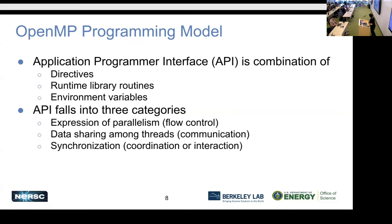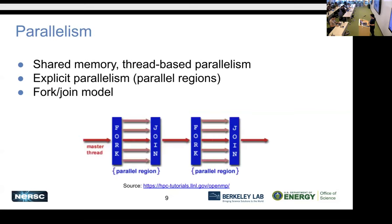OpenMP uses a shared memory, thread-based paradigm called the fork-join model. One primary thread starts the program, then launches into a parallel region where it forks a team of threads. These threads distribute and run the workload in parallel. When the parallel region finishes, they join back to a single thread. You can then fork another parallel region, and you can also have nested parallel regions where one thread in a team forks another team of threads.